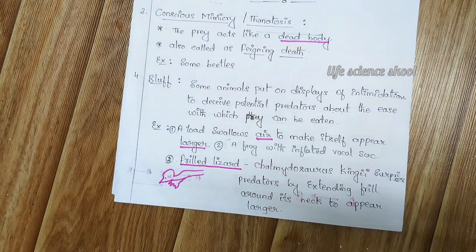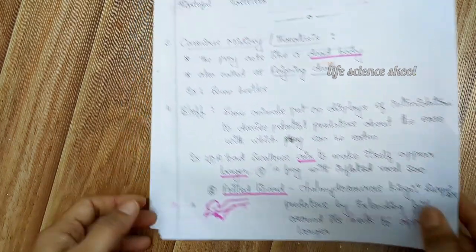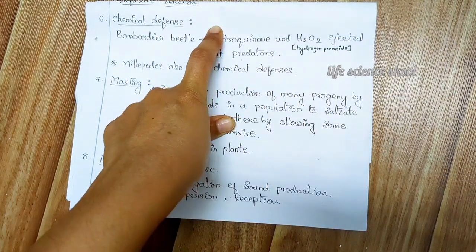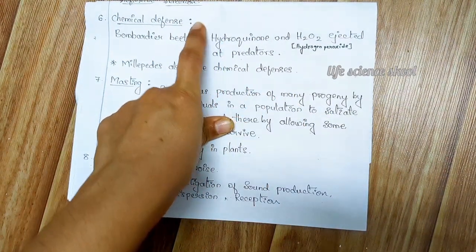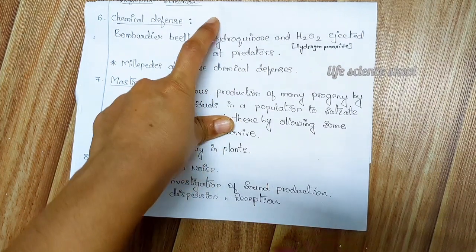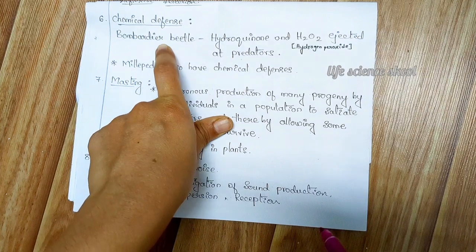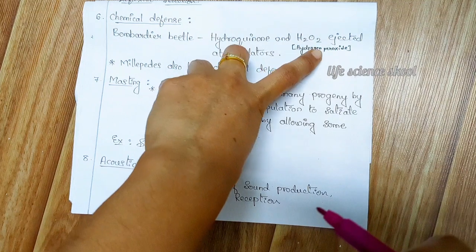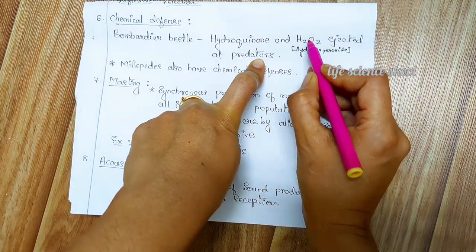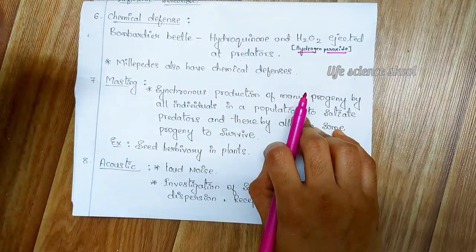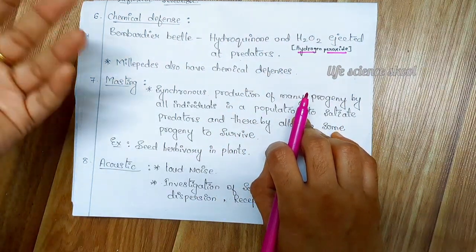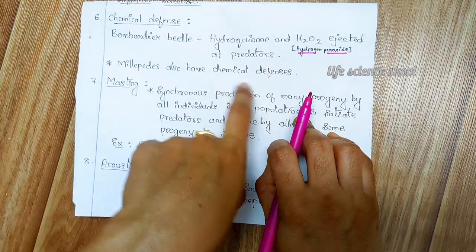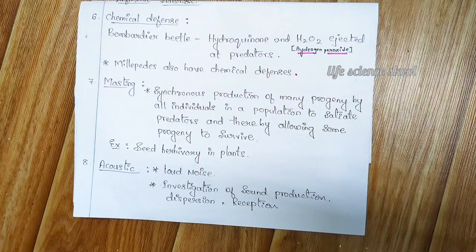Moving on: chemical defense. Some prey eject or spray chemicals at predators. For example, the bombardier beetle ejects hydroquinone or hydrogen peroxide (H2O2) at predators to escape. Millipedes also have a chemical defense mechanism.